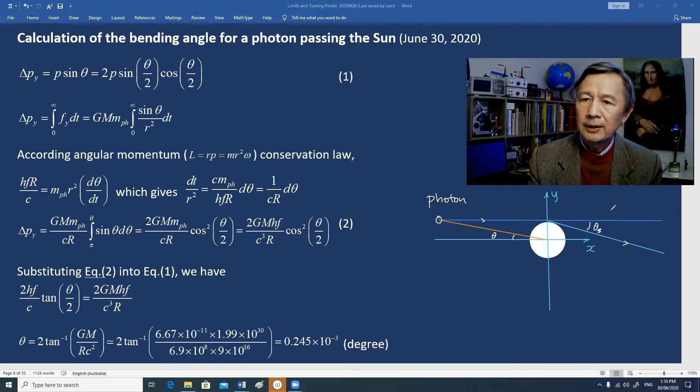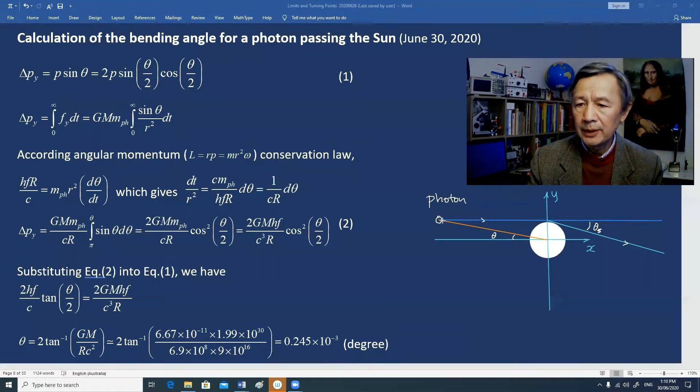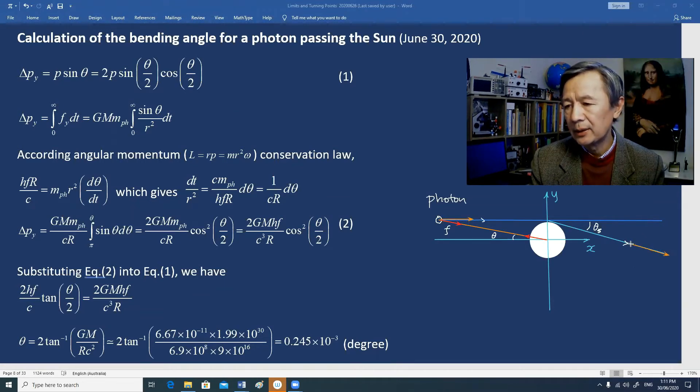Another diagram I would like to draw shows the photon and the force between the photon and the Sun. Initially, the momentum of the photon is horizontal, then it changes direction.